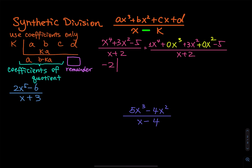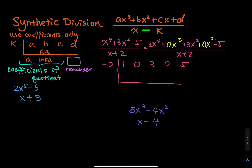We draw a big L. The dividend coefficients are 1, 0, 3, 0, negative 5. Now you pull the one down, then take this one and multiply by negative two: one times negative two equals negative two. For synthetic division we add, so zero plus negative two equals negative two. Then negative two times negative two equals positive four. Three plus four equals seven. Then seven times negative two gives negative 14. Zero plus negative 14. Then negative 14 times negative two gives positive 28. Negative five plus 28 equals 23.